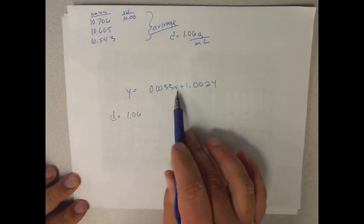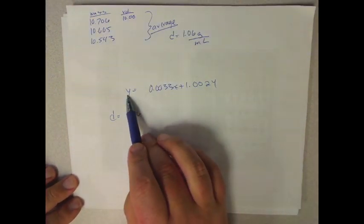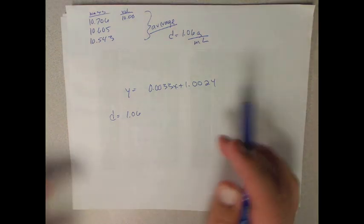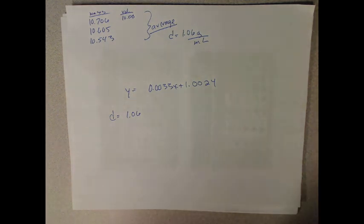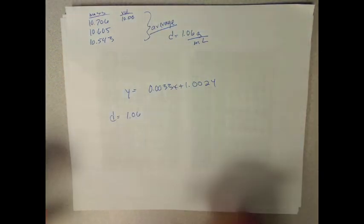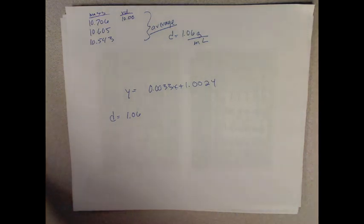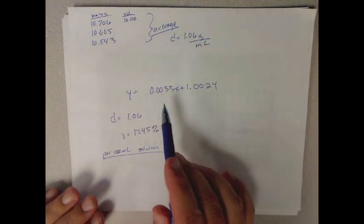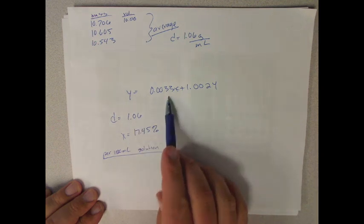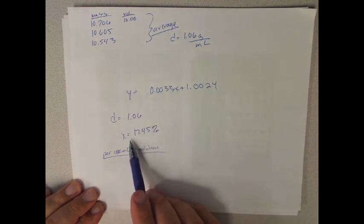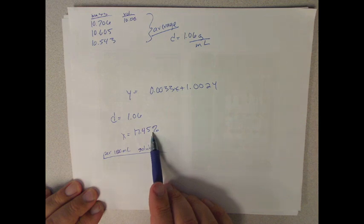Then you should be able to solve for x by plugging this density into y, solve for x, and it'll tell you then what the mass percent of sugar that would be in your sample would be. Then you could figure out by the volume of your sample, if you know the density of it. So we say its density is 1.06. If you do this equation then, you'll find that x, if you plug this into here, you'd find that x equals 17.45 percent.